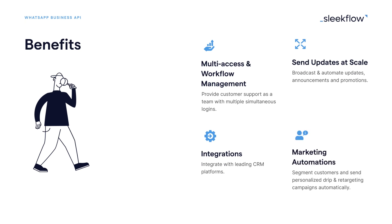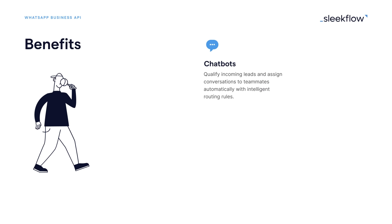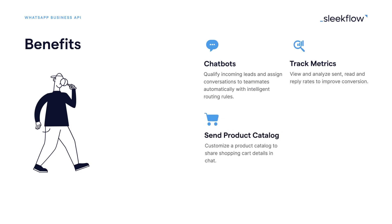Run drip and retargeting campaigns by delivering automated messages triggered by specific events and behaviors. Build chatbots to qualify and convert conversations, as well as measure various conversion metrics such as lead inquiries and click-through rate. Integrate with your e-commerce store or customize a product catalog to share shopping cart details and one-click checkout links through WhatsApp.